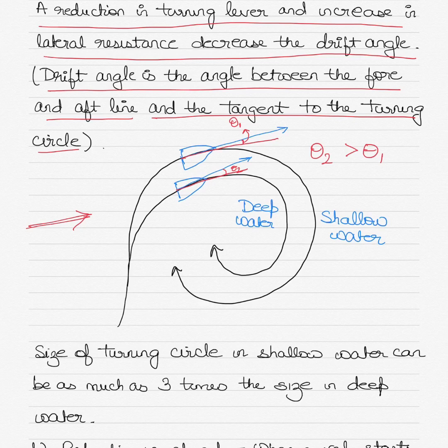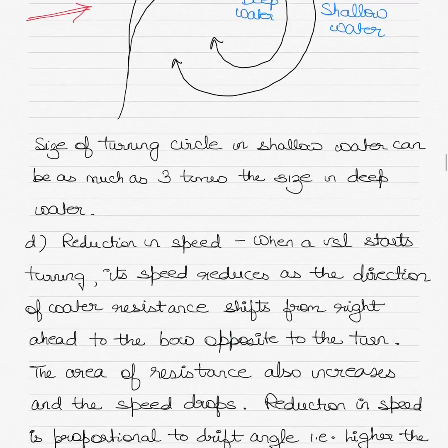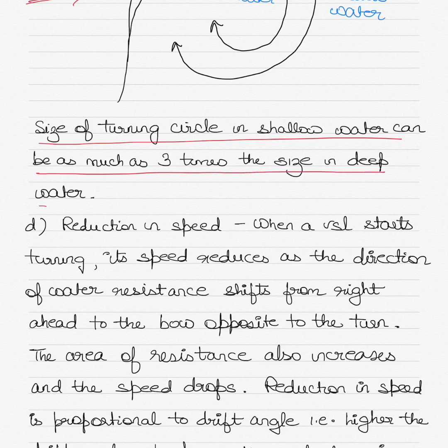The second drawing is the turning circle of the vessel in deep water. You can see that the turning circle in deep water is much smaller than the turning circle in shallow water. It is easier for the vessel to turn when deeper waters are available compared to shallow water. The size of the turning circle in shallow water can be as much as three times the size in deep water.